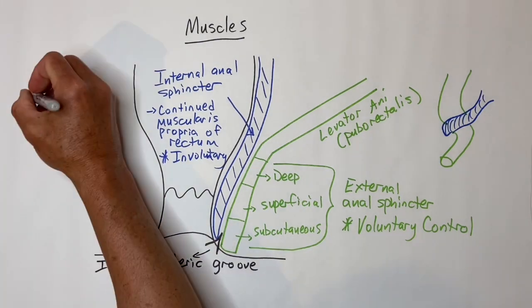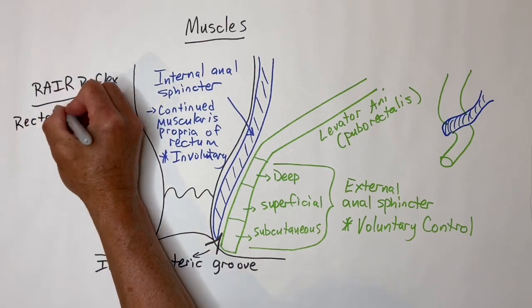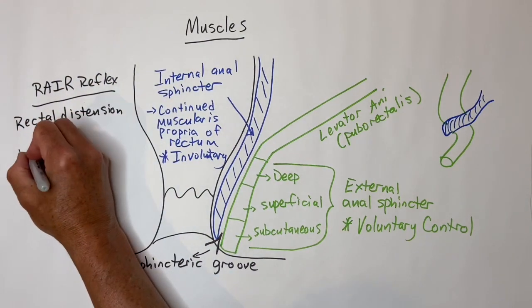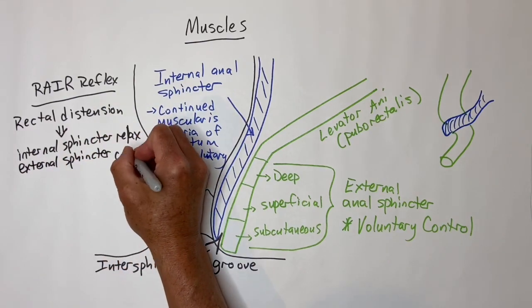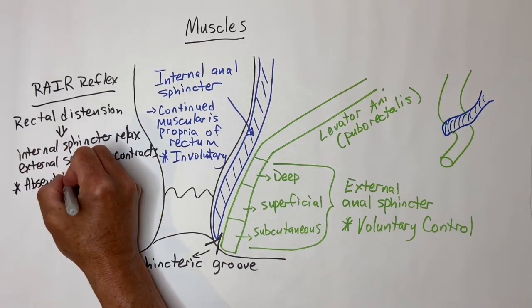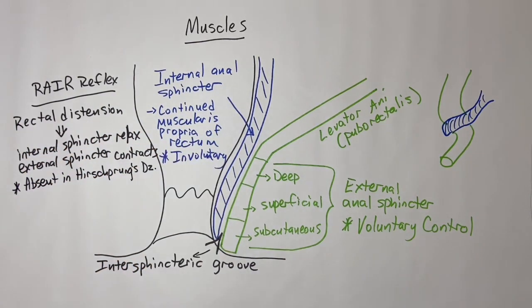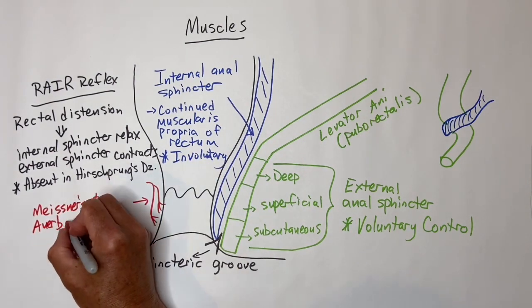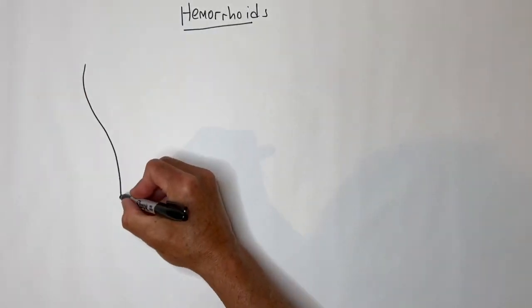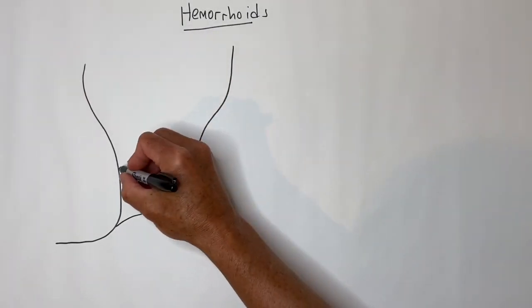Rectal distension causes the internal anal sphincter to involuntarily relax and the external anal sphincter to contract. This is called the RAIR or rectoanal inhibitory reflex. This is absent in Hirschsprung's disease since the Meissner's submucosal and Auerbach's myenteric plexuses are absent.